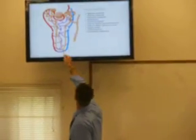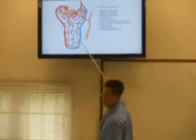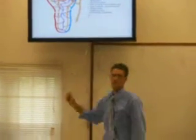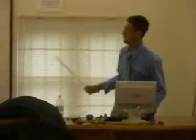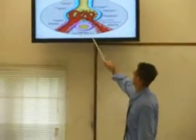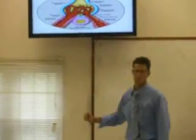Then you have the proximal convoluted tubule, which is thick. And then you have the descending limb, which is thin. And then the ascending limb, which is also thin. And then you have the distal convoluted tubule, which is a thick portion, which then leads into the collecting duct. The glomerular capillaries have your afferent arteriole, your efferent arteriole, and your macula densa cells, which play a different role. And then it's the proximal tubule, which is pretty much the beginning of the actual nephron before you get into the descending fluid.